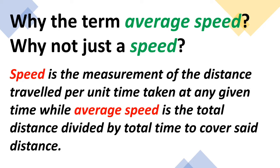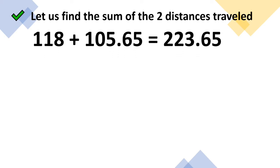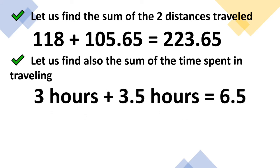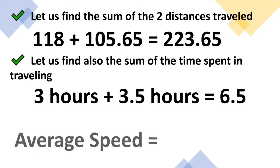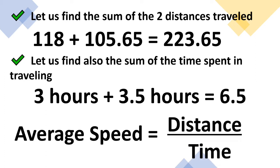The problem: Let us find the sum of the two distances traveled. So 118 plus 105.65 is equal to 223.65. Let us also find the sum of the time spent in traveling. We have three hours plus 3.5 hours is equal to 6.5 hours. And that would give our formula: average speed is equal to distance divided by time.